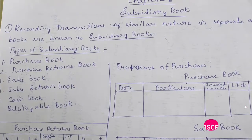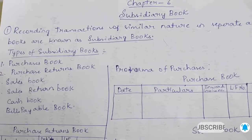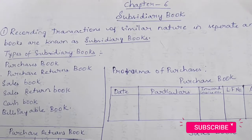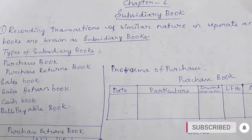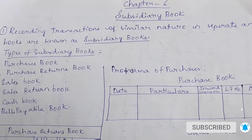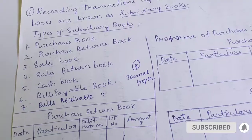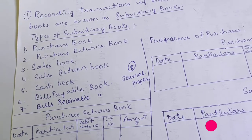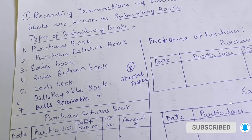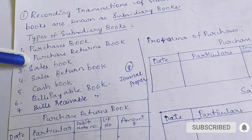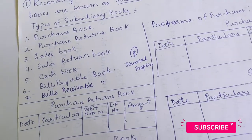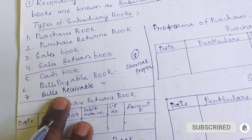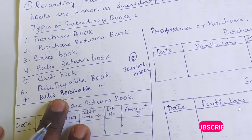In simple words, it is like a same journal but specialized. We have a total of 8 types of subsidiary books. But in this chapter, the most important ones are the purchase book, purchase returns book, sales book, and sales returns book. These 4 are the main focus. Next is the cash book.